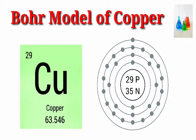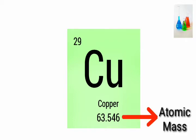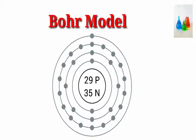Bohr model of copper. Atomic number 29, atomic mass 63.546 atomic mass units.